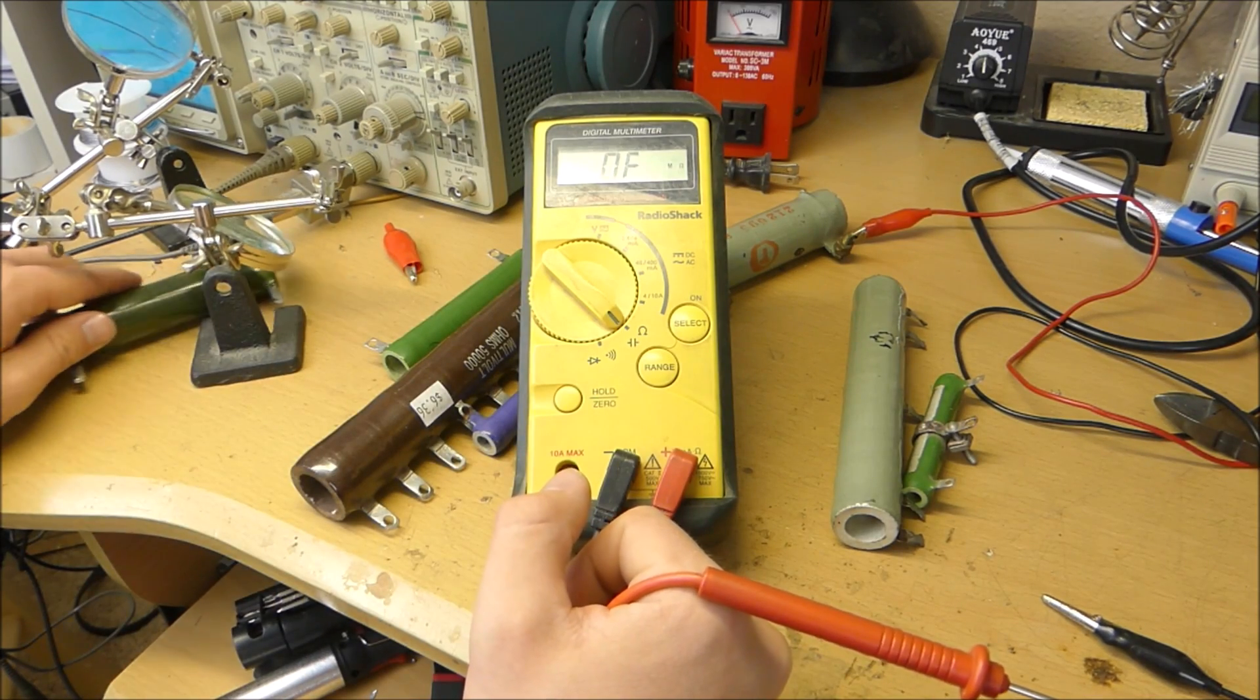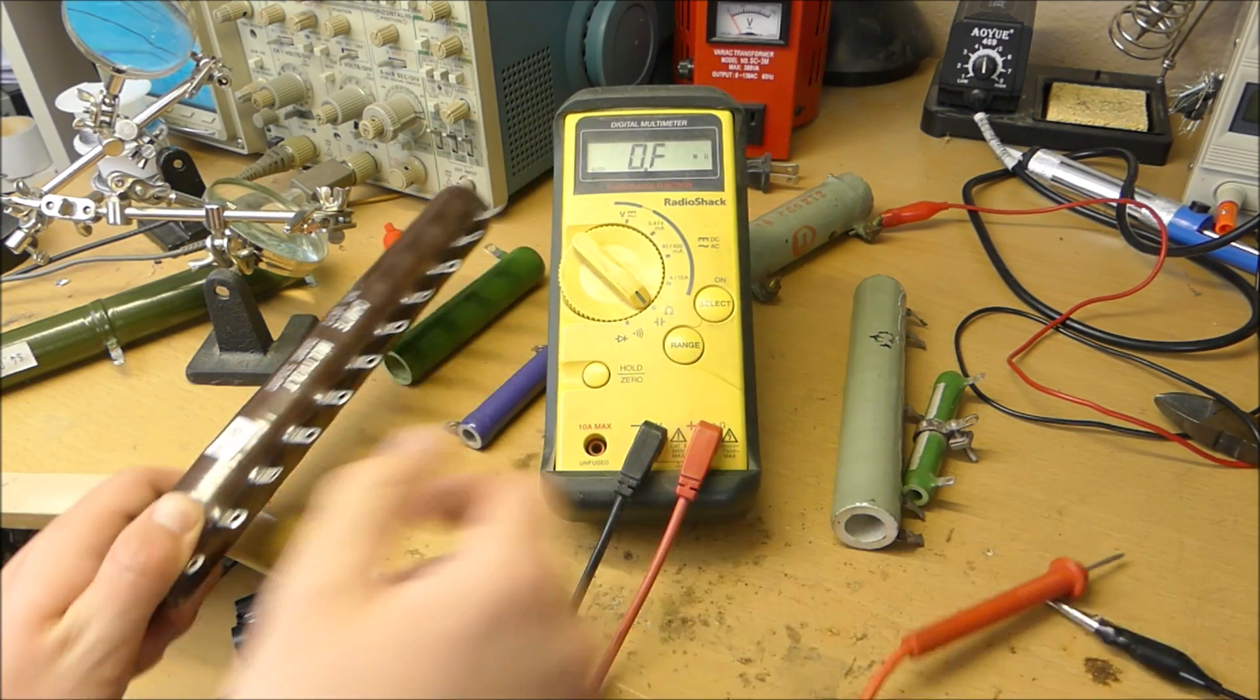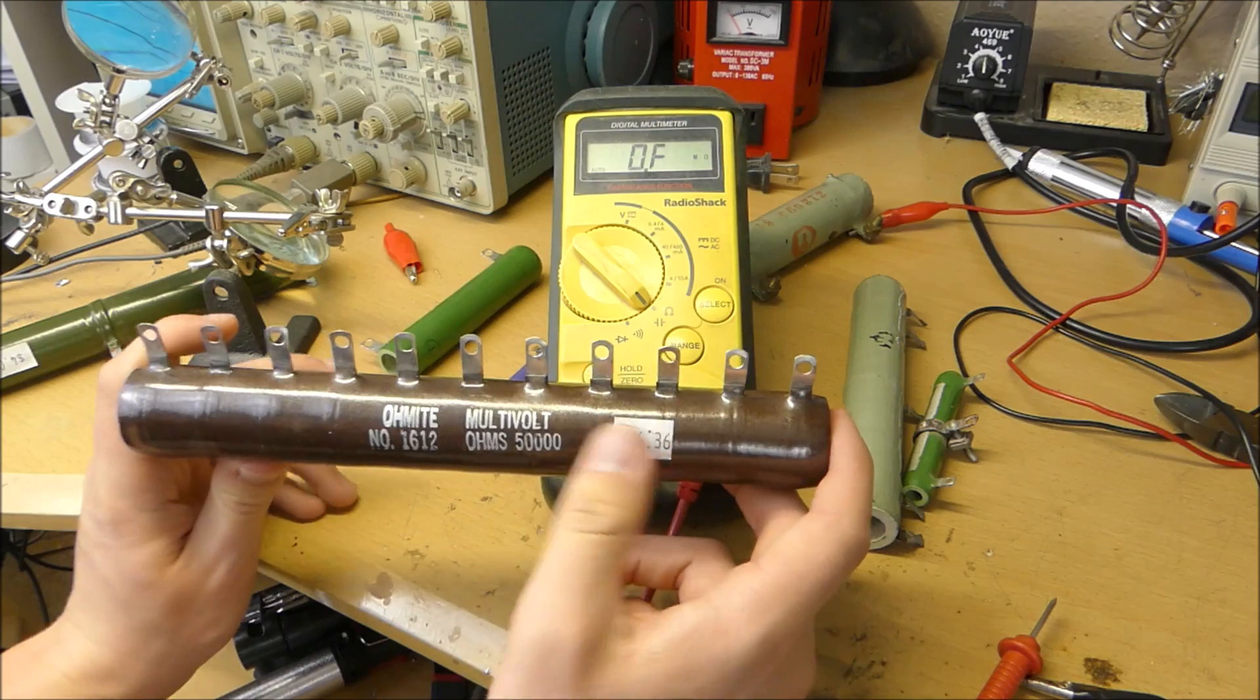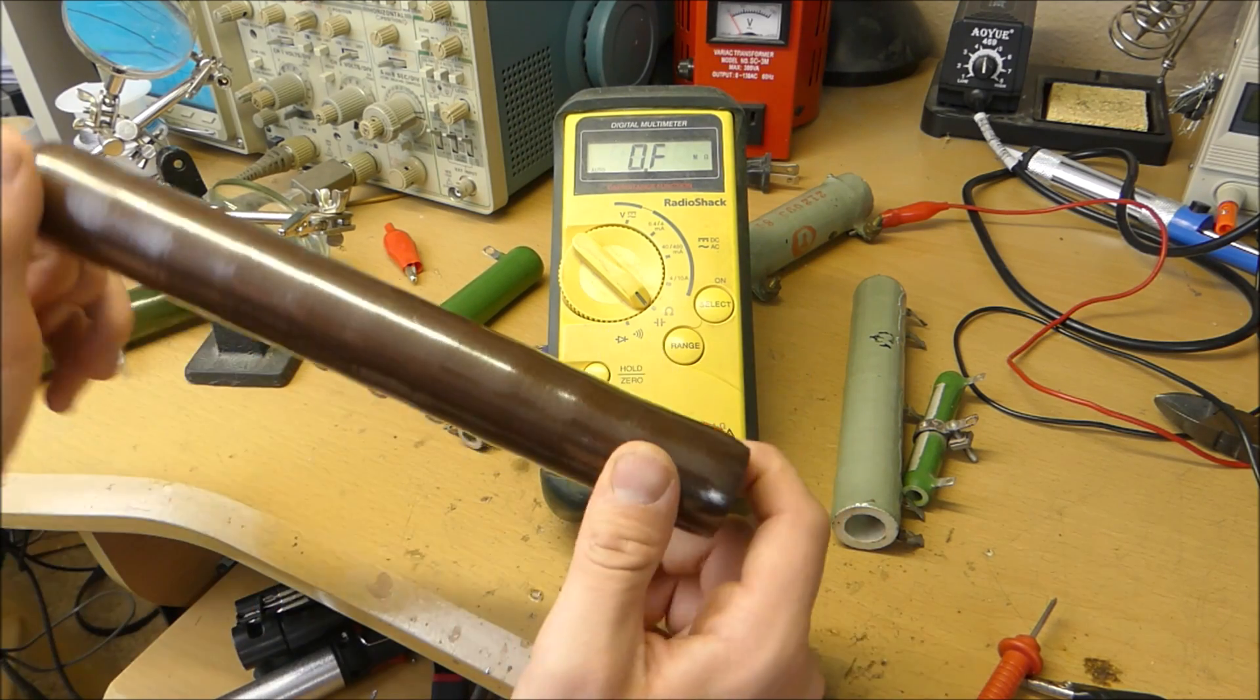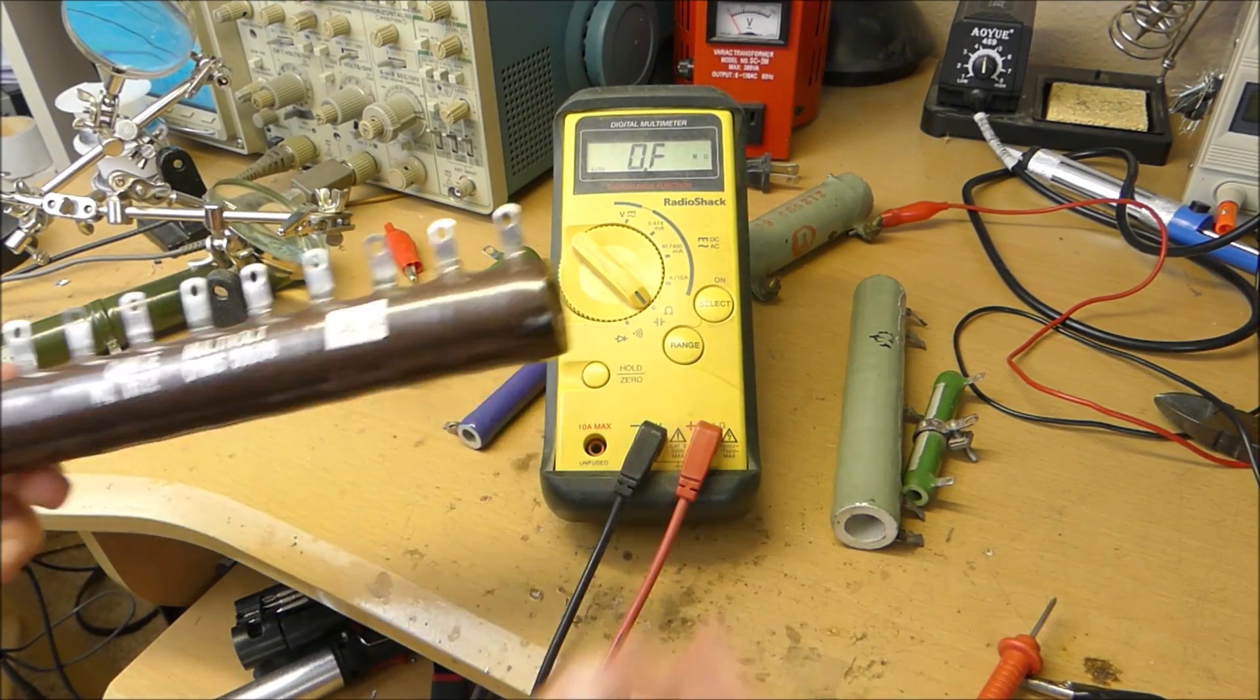This one is an Ohmite resistor. As you can see, it's 50,000 ohms and it's tapped at different points.